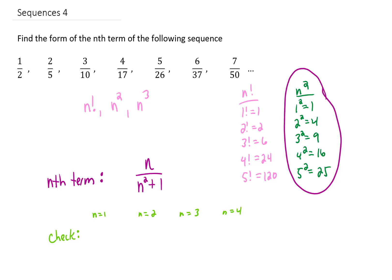To make sure that we got it right, it's probably a good idea to check. If we plug n equals 1 into this sequence, we get 1 over 1 squared plus 1 is 2. If we plug in n equals 2, we get 2 over 2 squared plus 1 equals 5. If we plug in n equals 3, we will get 3 over 3 squared plus 1, which is 10, and so on. So it looks like our answer checks out, and we're finished with this problem.